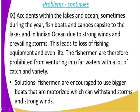Number nine is accidents within lakes and oceans. Sometimes fishing boats and canoes capsize in the lake and Indian Ocean due to strong winds and prevailing storms, resulting in loss of fishing equipment and even loss of life. Fishermen are therefore reluctant to venture into far waters where there is more catch and variety. The solution is to encourage fishermen to use bigger, motorized boats that can withstand storms and strong winds.